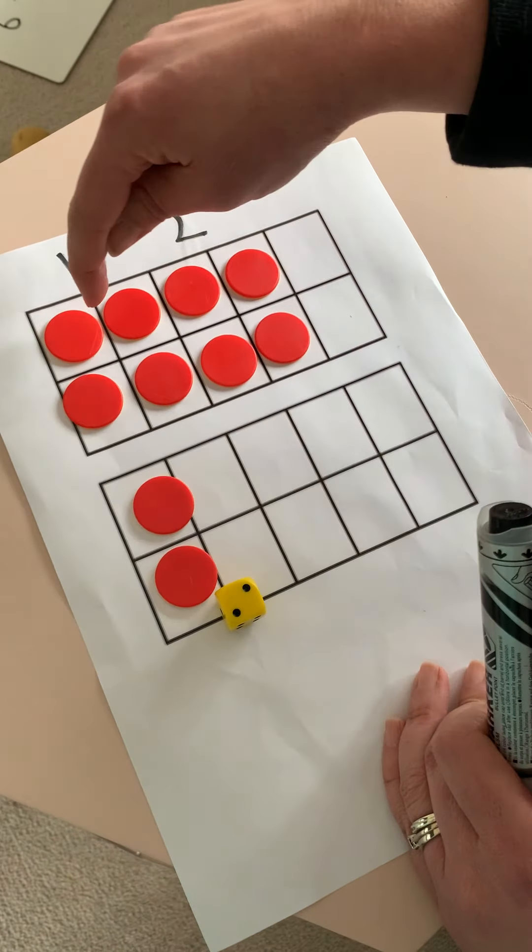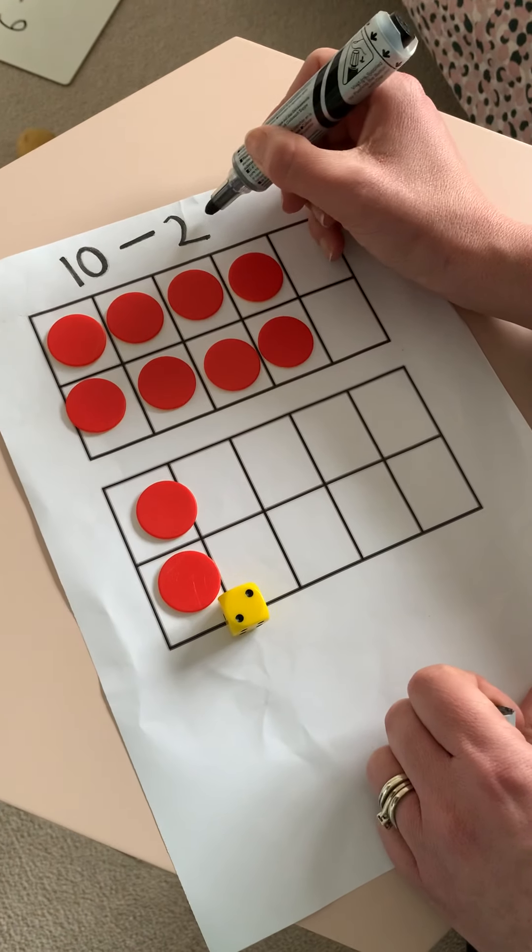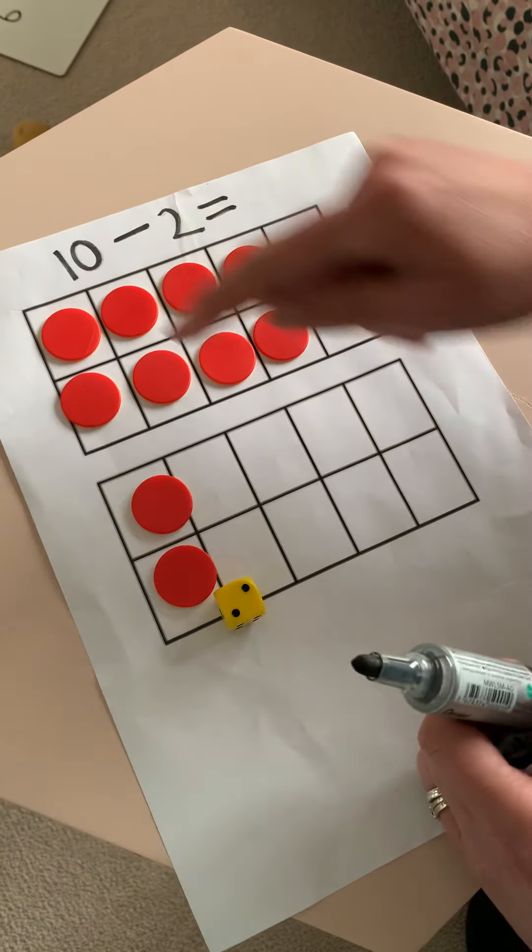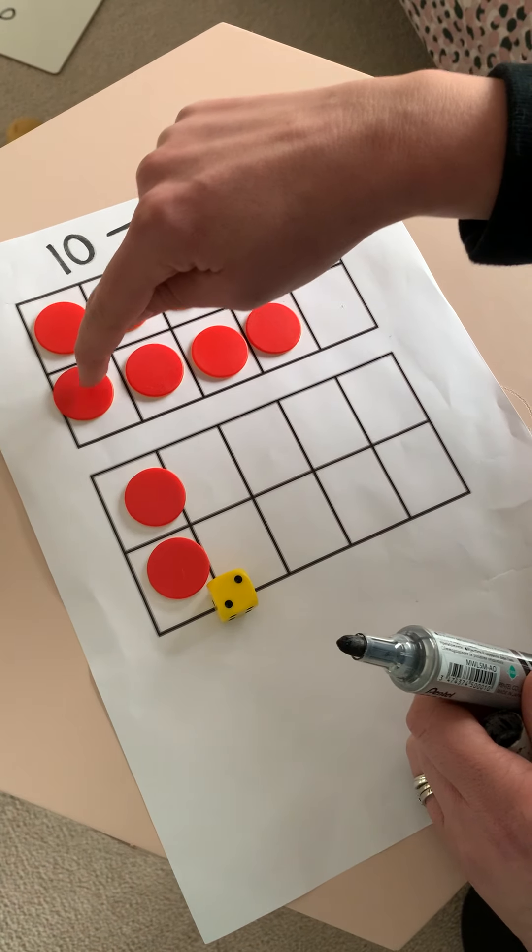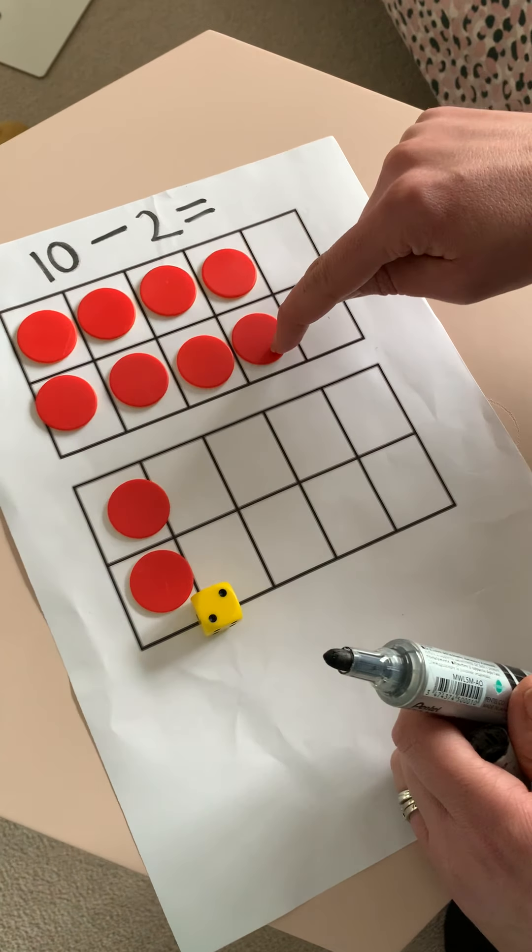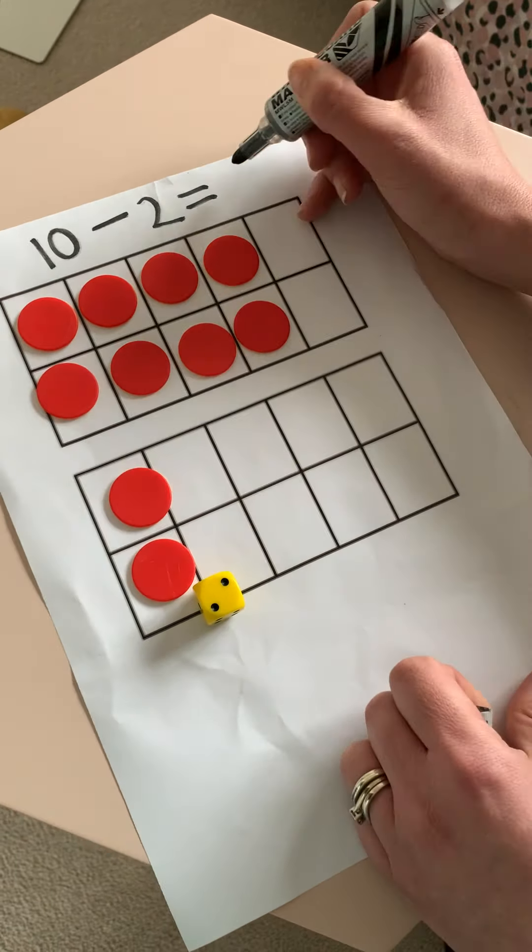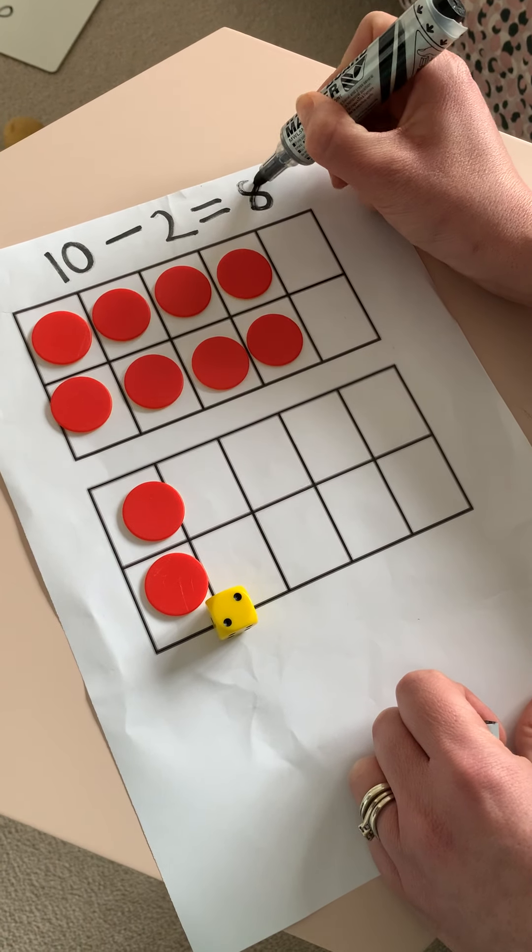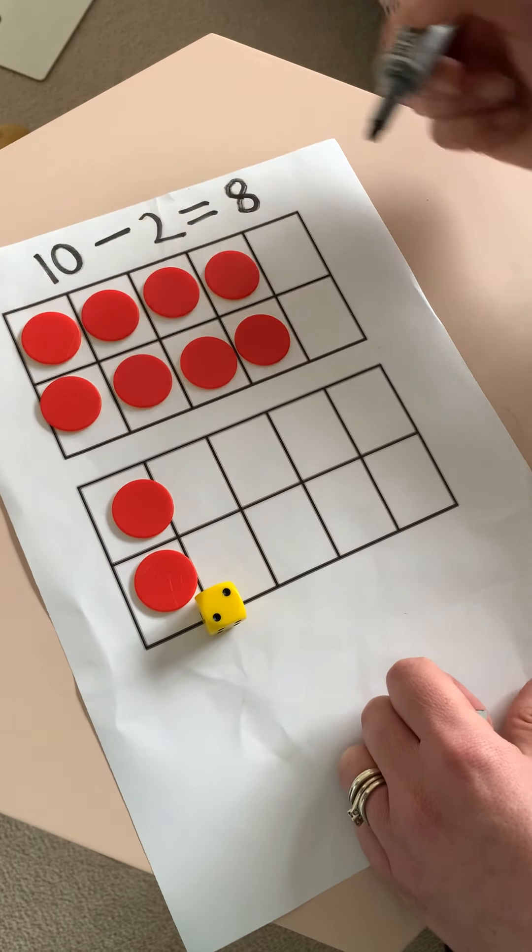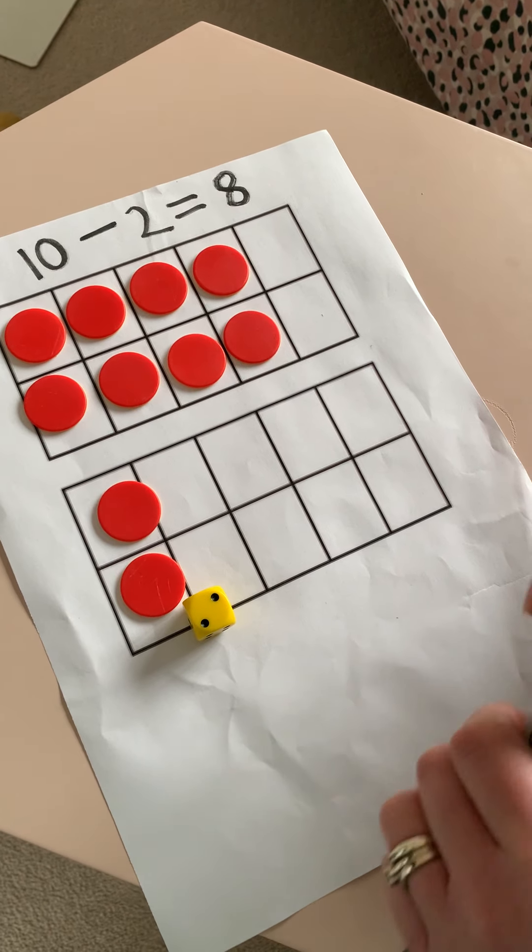So 10, take away 2, makes or equals 1, 2, 3, 4, 5, 6, 7, 8. That's right, the answer is 8. 10, take away 2, equals 8. Let's have another try.